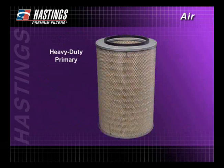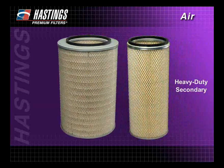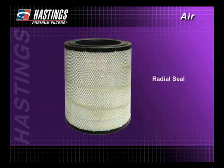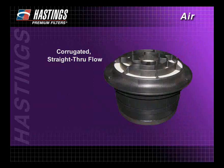There are several types of heavy duty air filters. Heavy duty filters include primary filters, which usually have metal ends and are available in both standard and long life models. Heavy duty secondary filters, which are used to seal out dirt while the primary filter is being serviced. Disposable housing filters, which are designed with both the filter and housing in one unit and are easy to replace. Radial seal filters, which are designed with molded ends to make servicing easier and more cost effective. And corrugated straight through flow filters, which are designed to have high flow and high capacity in a more compact filter.